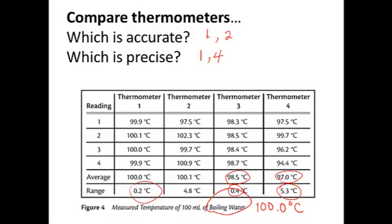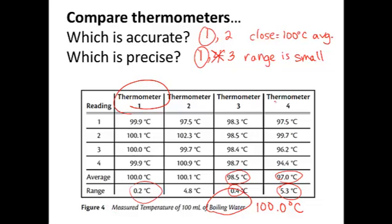So thermometers 1 and 2 are close to 100 on average. Thermometers 1 and 3 are the most precise, and I'd probably then use thermometer 1. It's probably the best thermometer to use. I would probably throw away thermometer 4 because it's neither accurate nor precise.